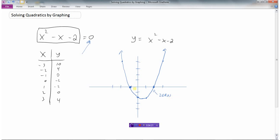Makes sense, because they're where the y value is 0. So where does x squared minus x minus 2 equal 0? When x is minus 1, we get 0, and when x is 2, we got 0. So our solution would be x equals minus 1 and x equals 2.